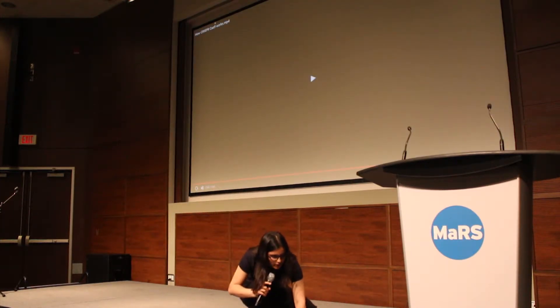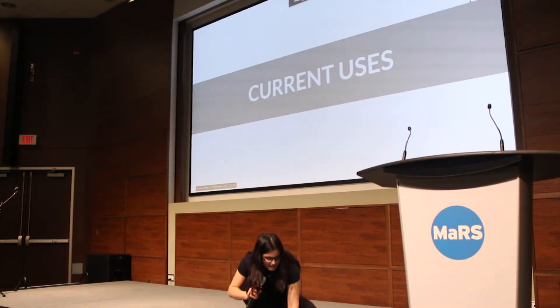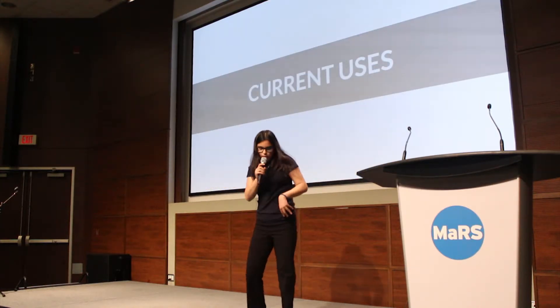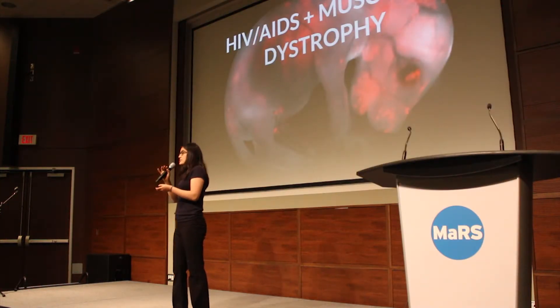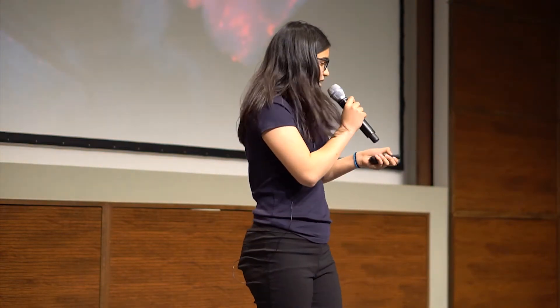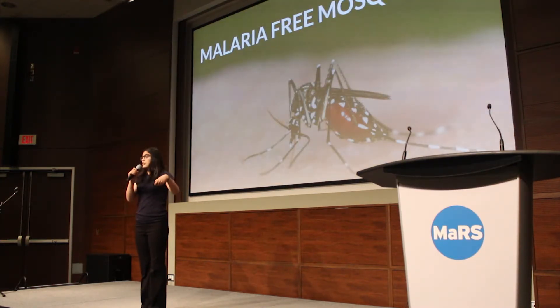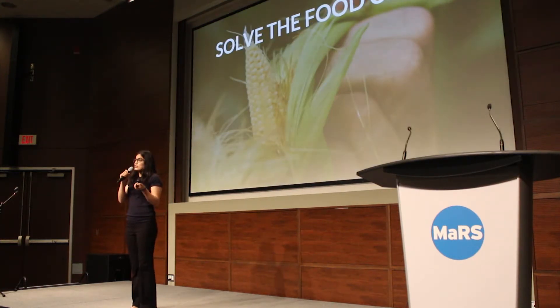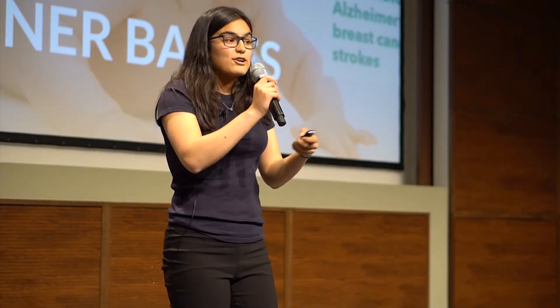That's pretty amazing. What are the current uses of this technology? First, it has cured many diseases already. SickKids Lab has already cured muscular dystrophy in mice in Toronto, and a lab in the UK has already cured HIV and AIDS in mice. But there are many more implications: cancer and other diseases can be cured with this technology, they want to create malaria-free mosquitoes, they want to solve the food crisis, and people are even talking about designer babies. These are really big problems that could be solved with the greatness that CRISPR-Cas9 and gene editing brings.